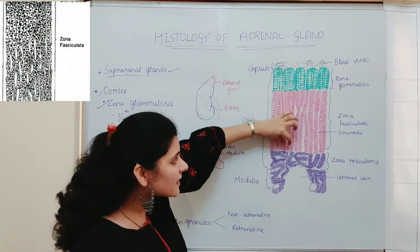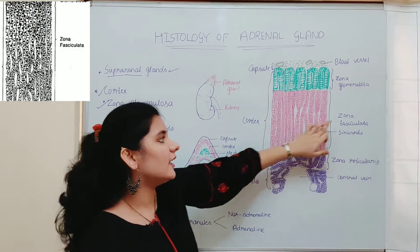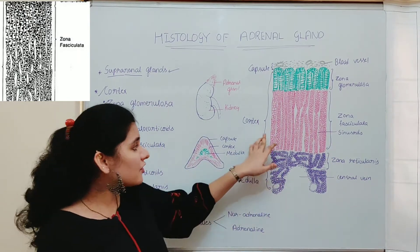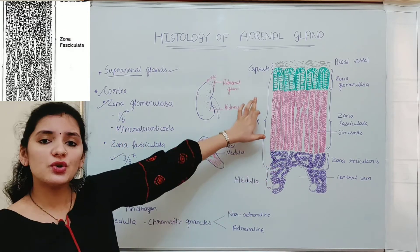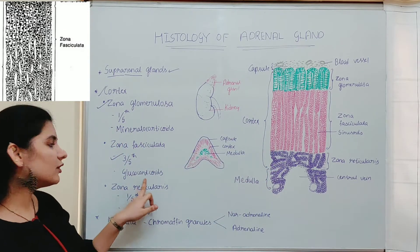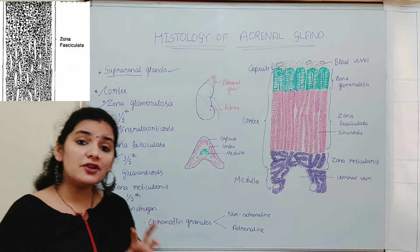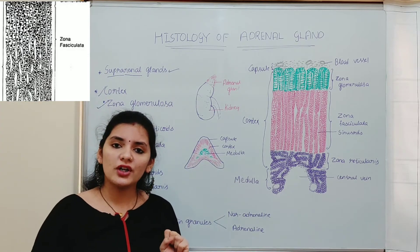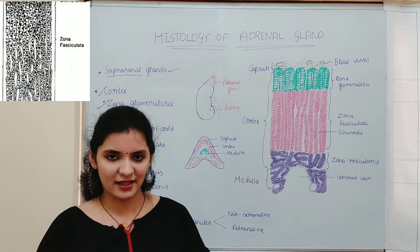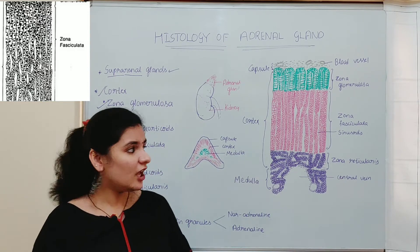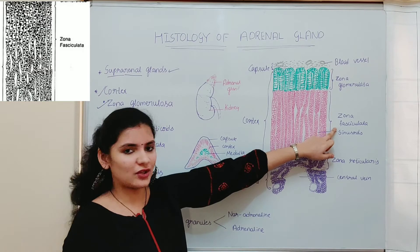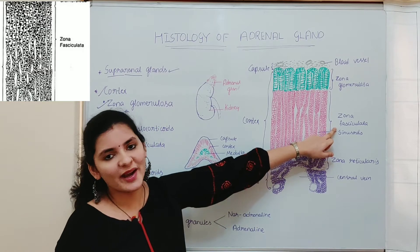The columns of cells in zona fasciculata are arranged parallelly. The function of this zone is the production of glucocorticoids, which maintain carbohydrate metabolism in the body. Zona fasciculata is the widest part of the cortex.